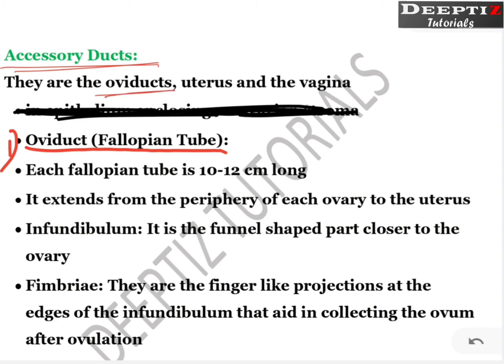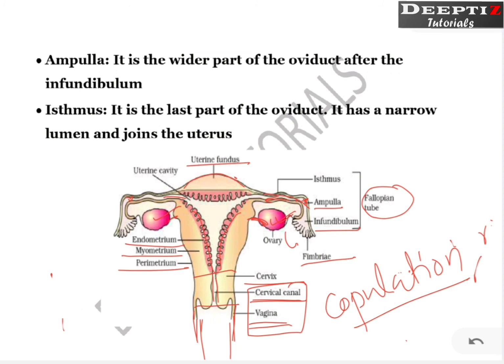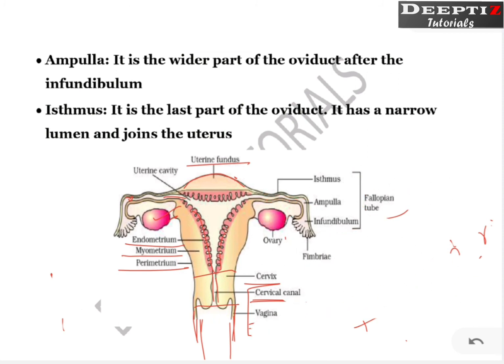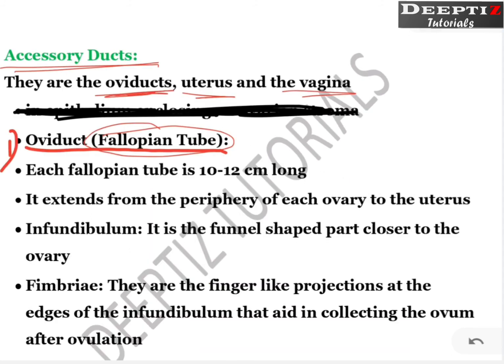The next topic is accessory ducts — the tube-like structures or channels through which sex cells, zygote, or fetus travel. These consist of the oviduct, uterus, and vagina. Oviducts are nothing but fallopian tubes. In case of the male we had sperm ducts such as vas efferens and vas deferens; in case of the female we have the fallopian tube or oviduct as the primary duct.